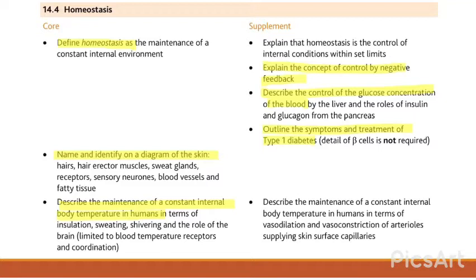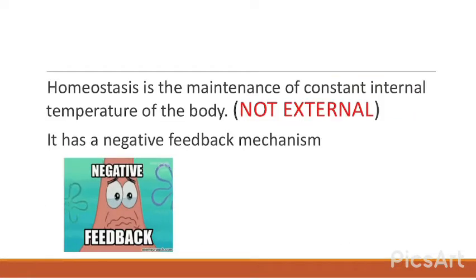Now let's start the topic. Here is the syllabus overview: we will define the term homeostasis, name and identify the diagram of the skin, describe the maintenance of a constant internal body temperature in humans. Homeostasis is the maintenance of a constant internal temperature of the body — not external. It works in a negative feedback mechanism.